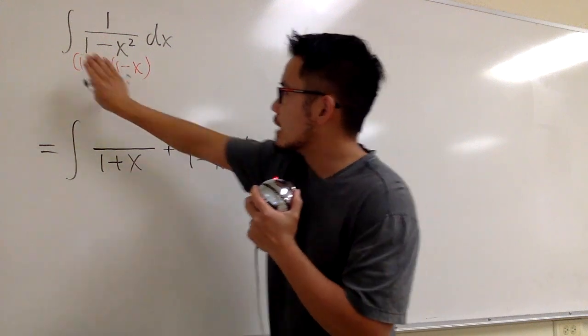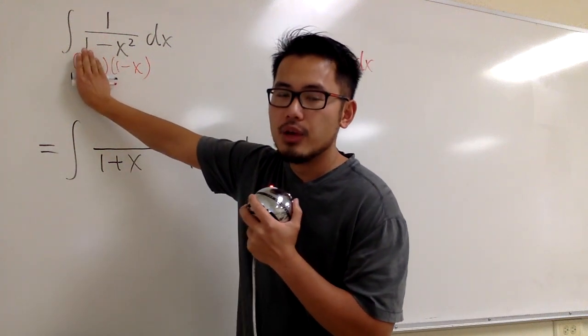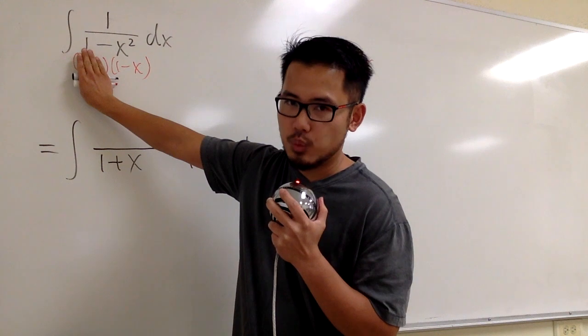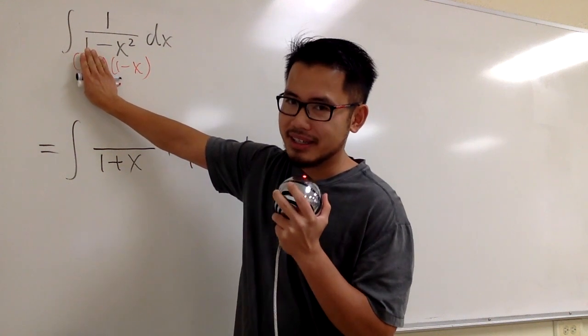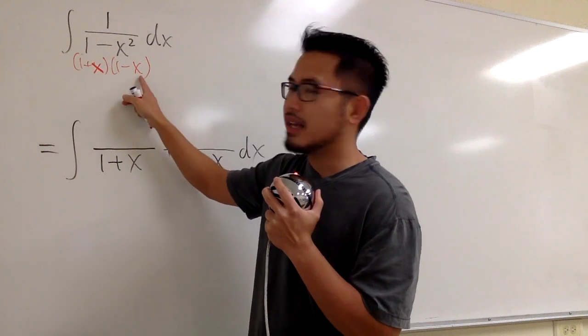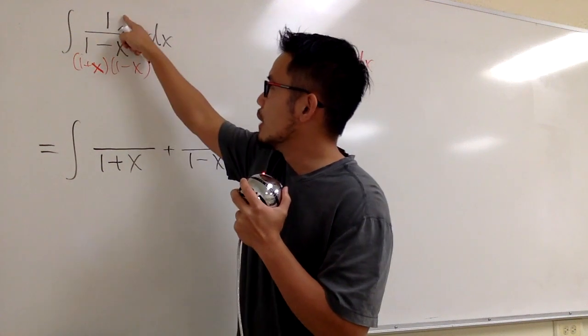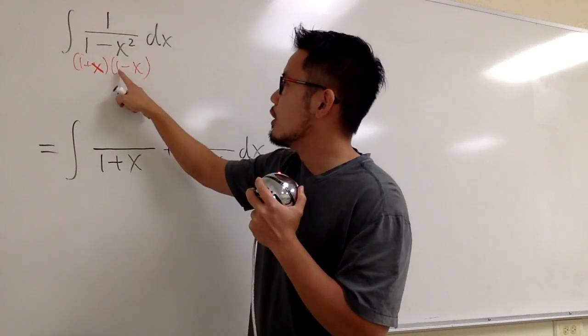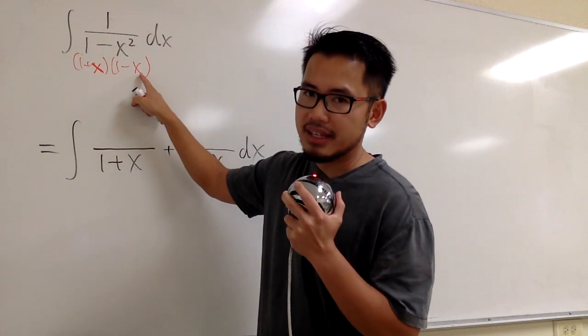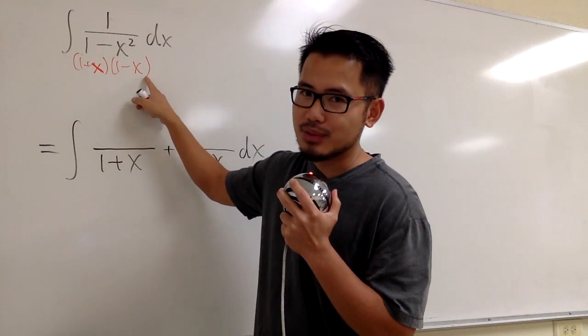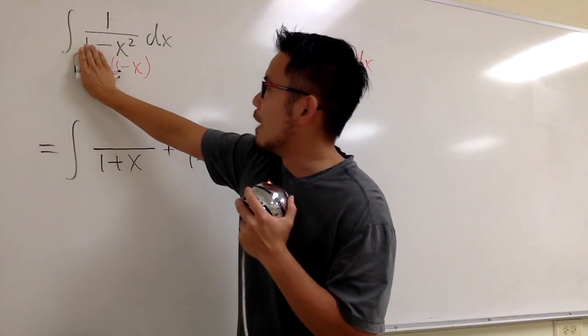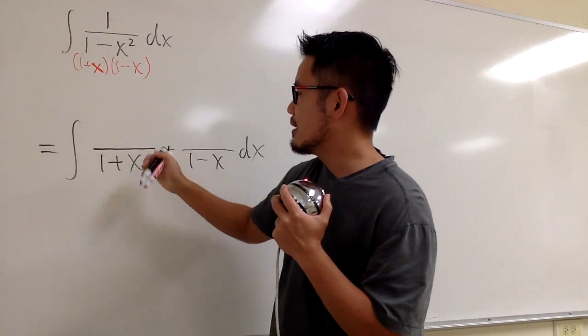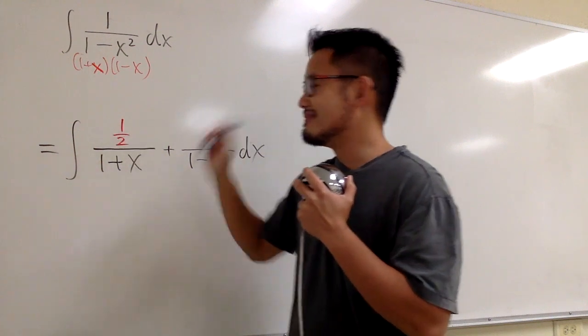So, when you covered this up, you have to let x is equal to negative 1, but this is gone already. What you have to do is, plug in negative 1 into the remaining x. So, we have 1 on the top, over 1 minus negative 1, which is the same as 1 plus 1, which is 2. So once you cover this up, you get 1 over 2, and that's the number right here. So that's 1 half. That's it. This is called the cover up method.